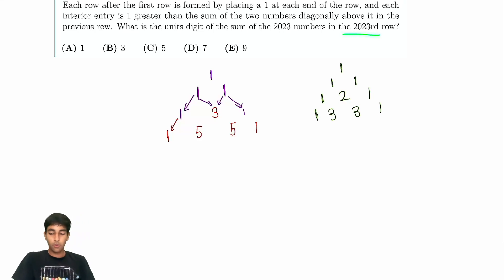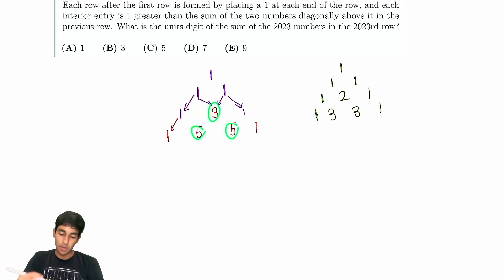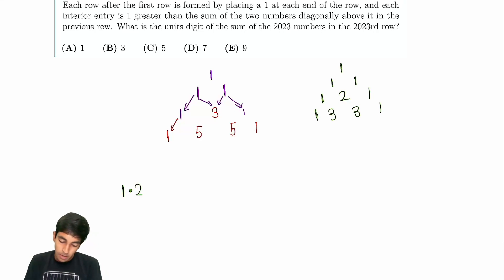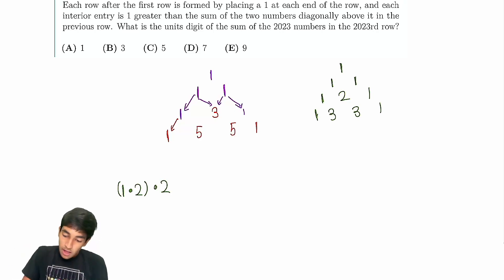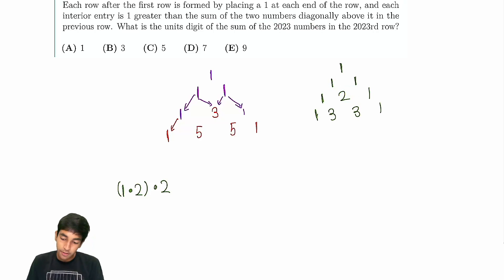So for every single number, it goes into 2 places in the next row. The sum will always double. So for pure Pascal's triangle, we'd compute 2 to the 2022 and find the units digit using standard unit cycles tricks. But this is more nuanced because we're adding 1 in the middle for each interior entry. So let's come up with an expression. We start with 1, then multiply by 2, but on top of that we add an additional 1 for each interior entry formed from two different numbers.